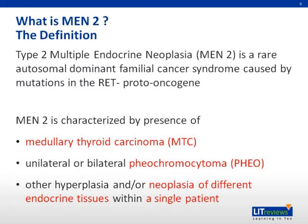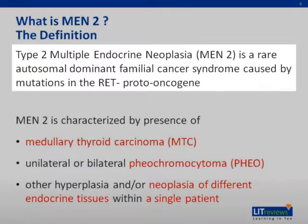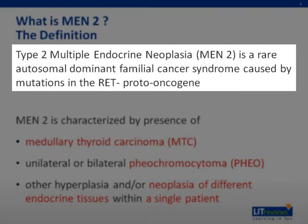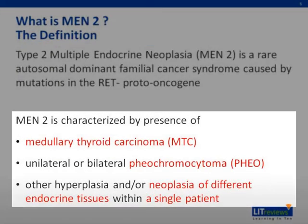Type 2 multiple endocrine neoplasia, or MEN2, is a rare autosomal dominant familial cancer syndrome caused by mutations in the RET proto-oncogene. It is characterized by the presence of medullary thyroid carcinoma (MTC), pheochromocytoma — either bilateral or unilateral — and hyperplasia or neoplasia of different endocrine tissues within a single patient.